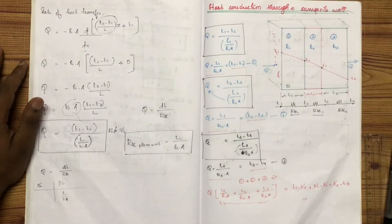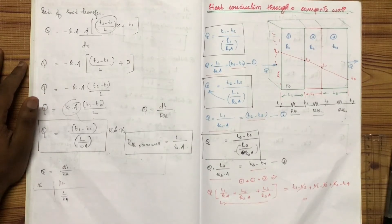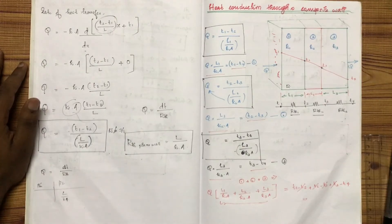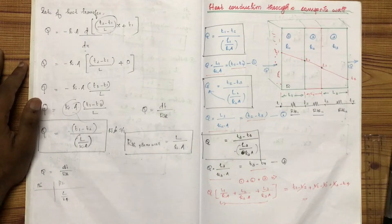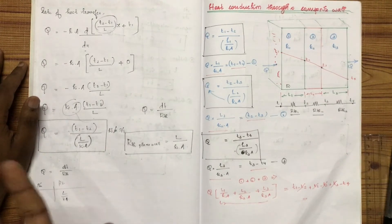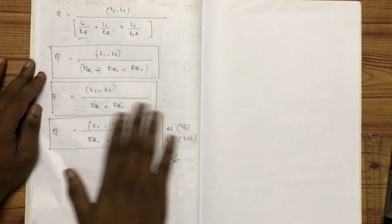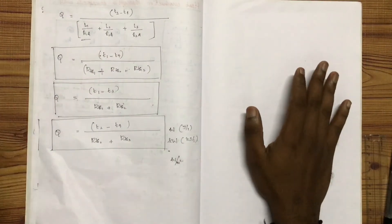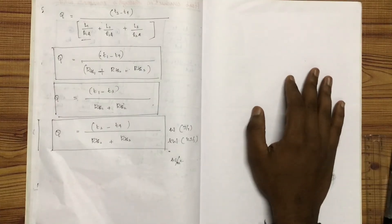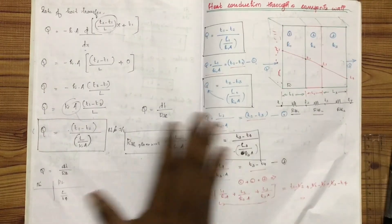We have to study the basic theory and basic equation for finding the convective heat transfer through a fluid medium, and that basic equation is Newton's law of cooling. If you have to study the plane wall, we also have to study the whole cylinder.